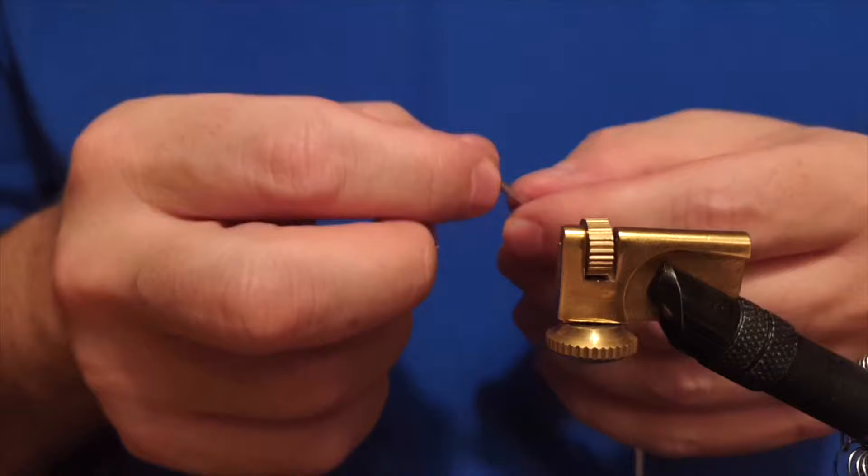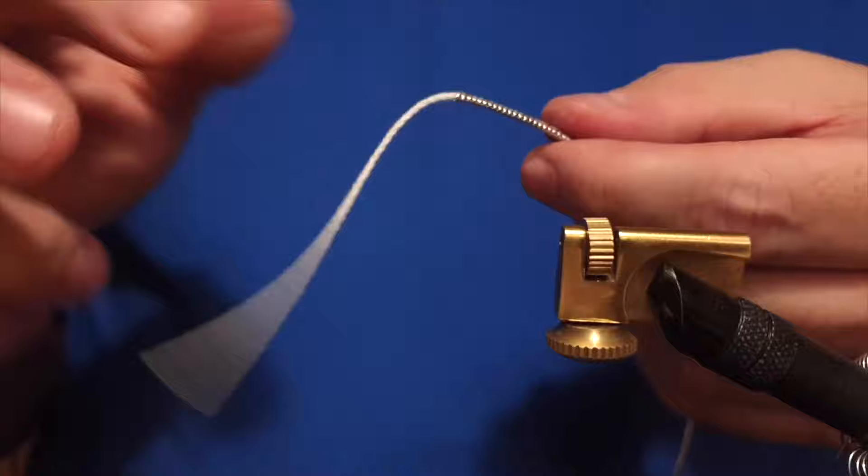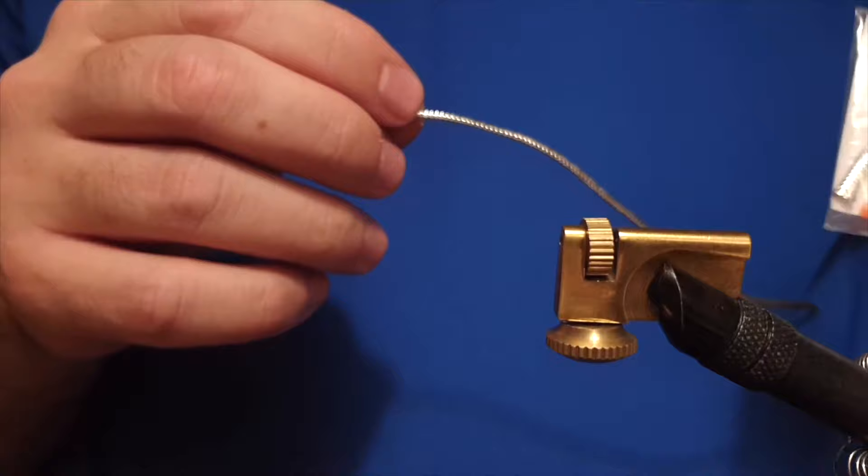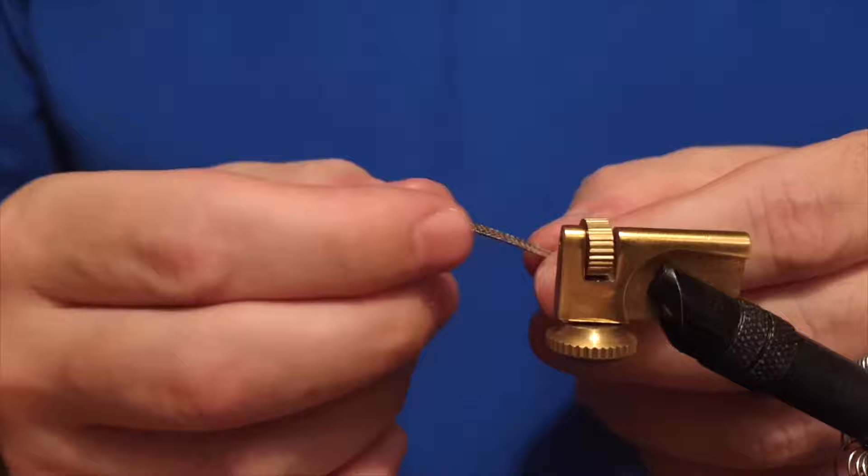Hello there, Ivar from Ivar's Fly Workshop. Today we are going to tie a fly called BISMO. BISMO is actually a variation of the Sunray Shadow fly, but as you'll see, it's quite different than the Sunray.